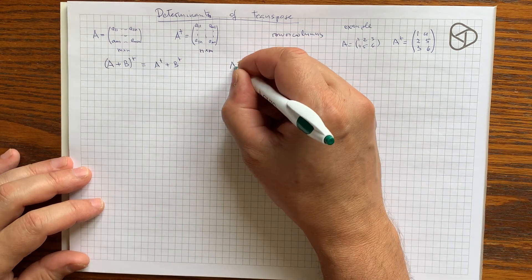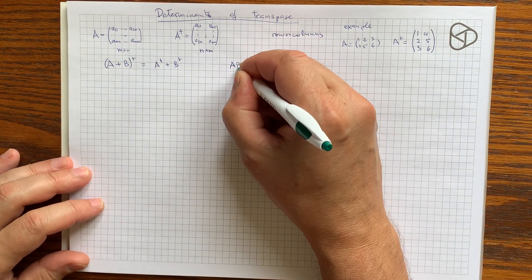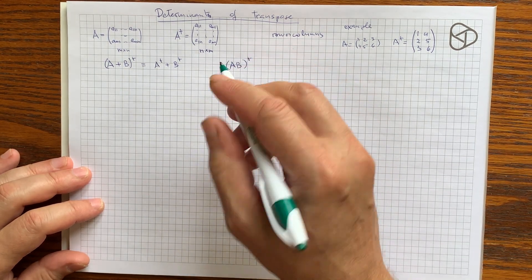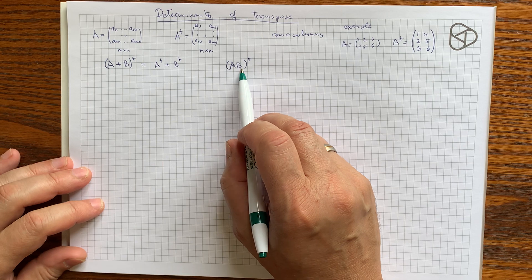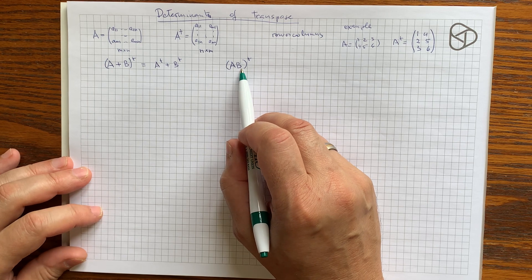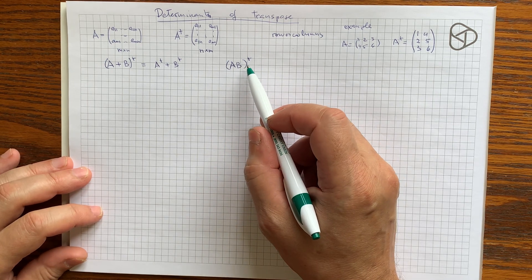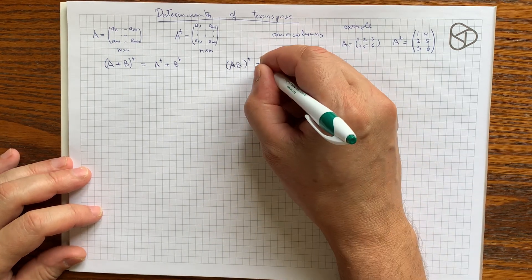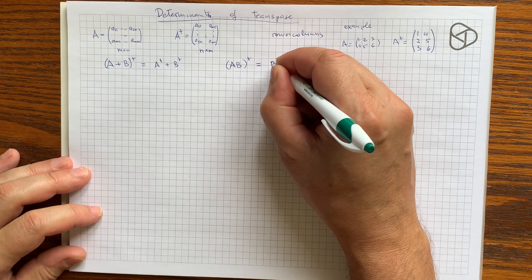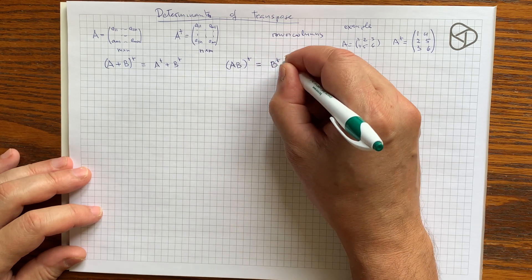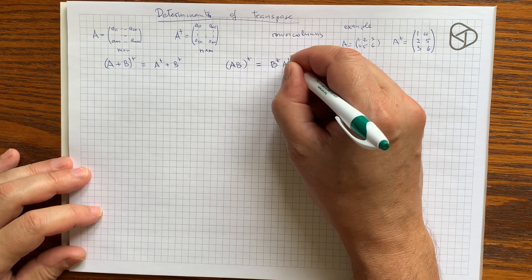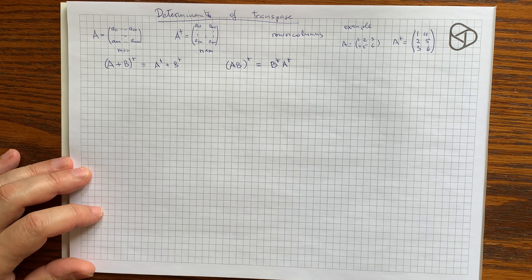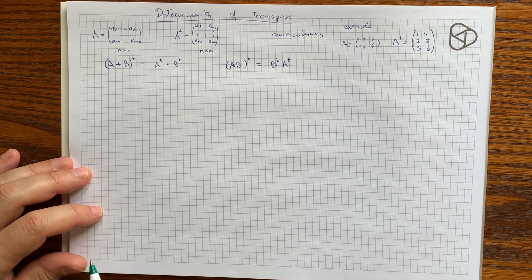The more interesting property is for the product. If we multiply two matrices and transpose the result, we can also compute it by taking the transposes of the factors and then multiplying them in the opposite order.